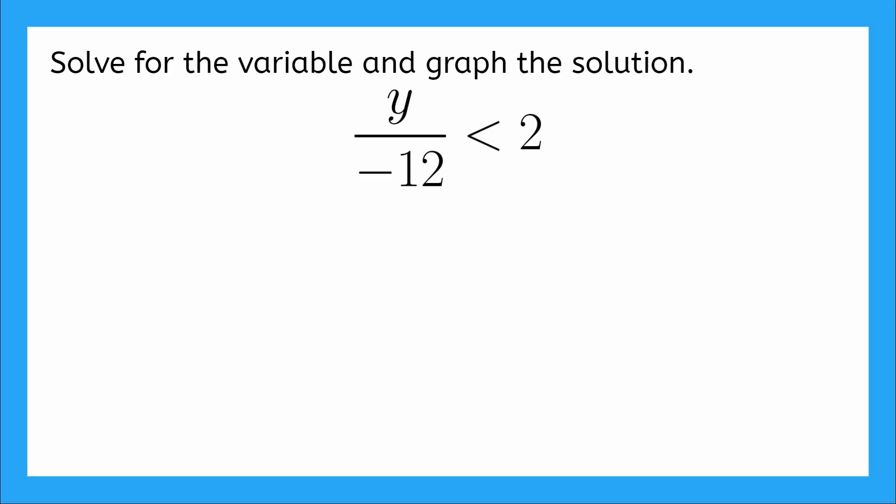Okay, let's try this one. Our inequality says y over negative 12 is less than 2. And we have to solve for the variable and graph the solution. So what do I do first? I need to get this y by itself. So I have to undo this division with negative 12. I can undo division with multiplication. So I'm going to multiply this side by negative 12. And I do the same thing over here, multiply by negative 12.